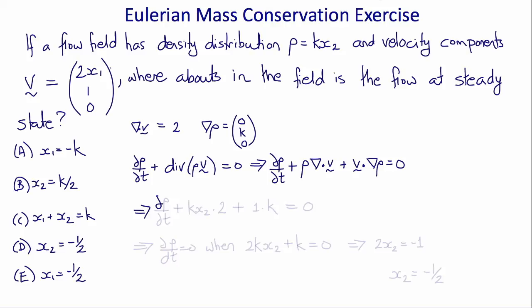Which then gives us that del rho del t plus k times x2 times 2, plus 1 times k, equals 0.